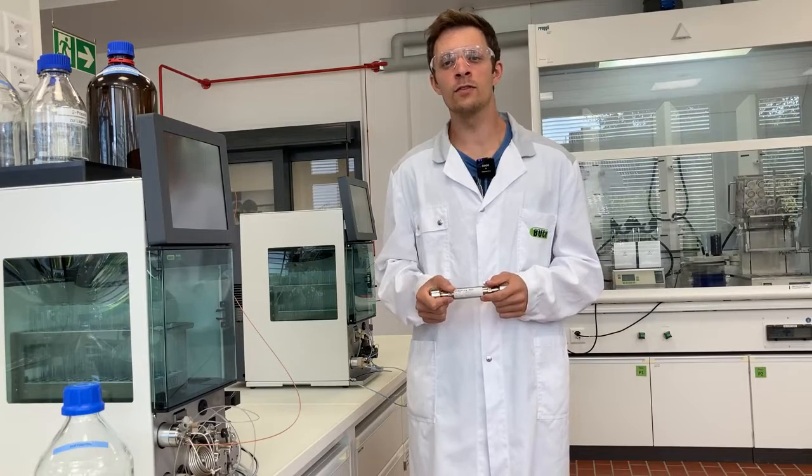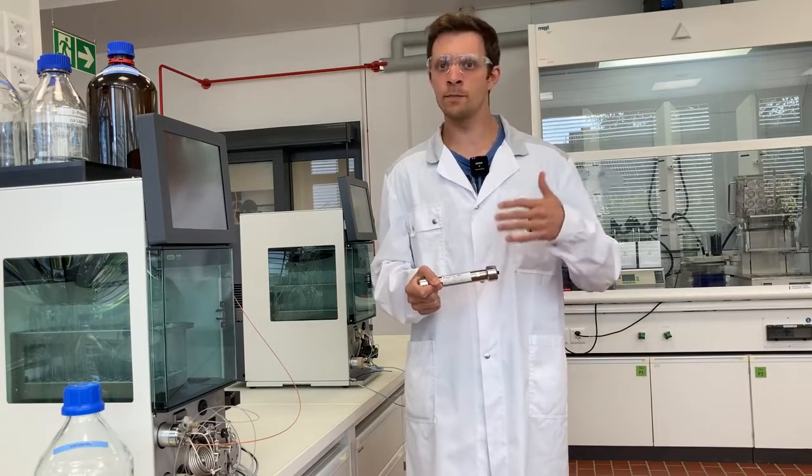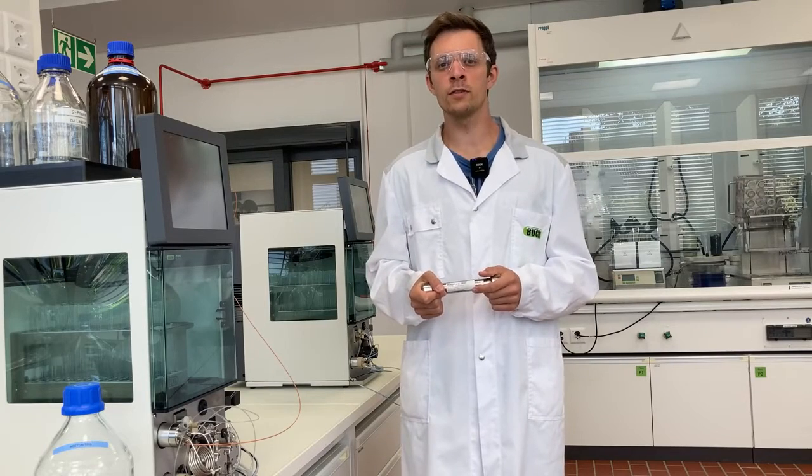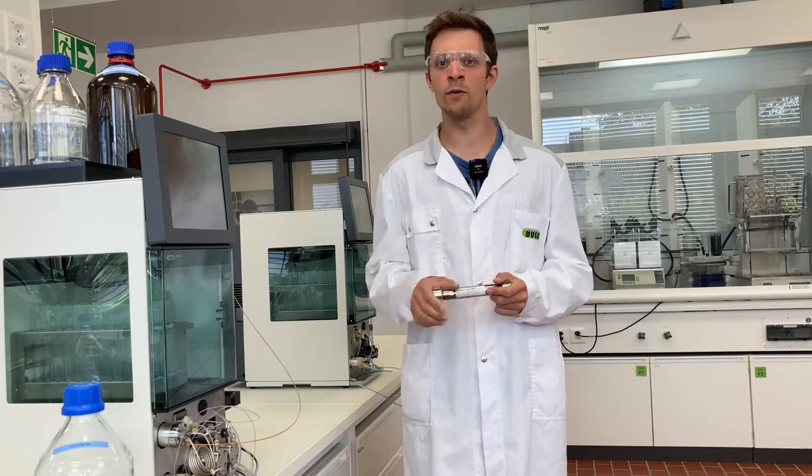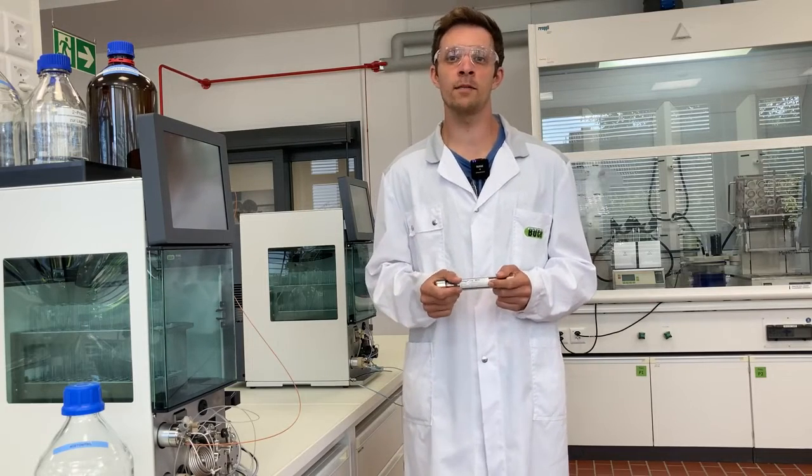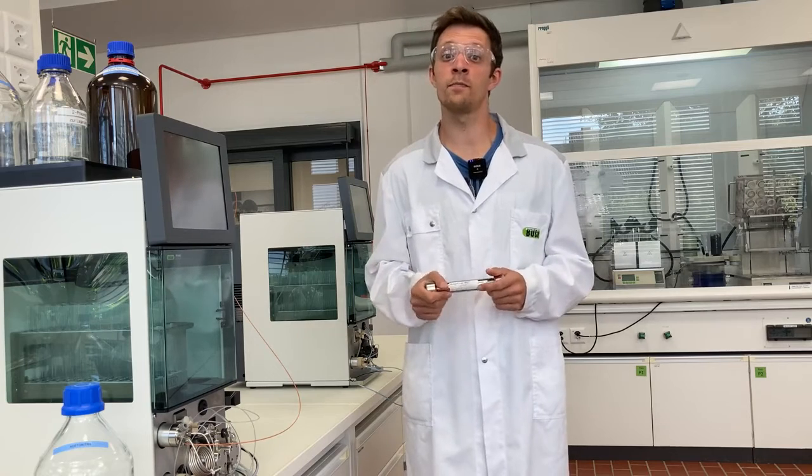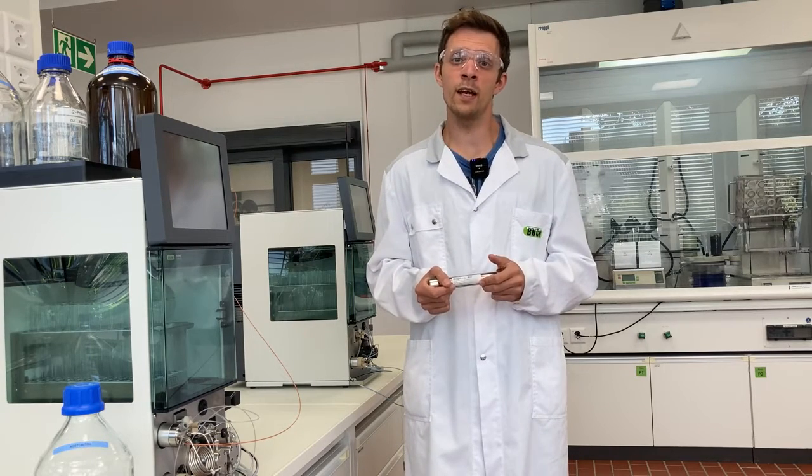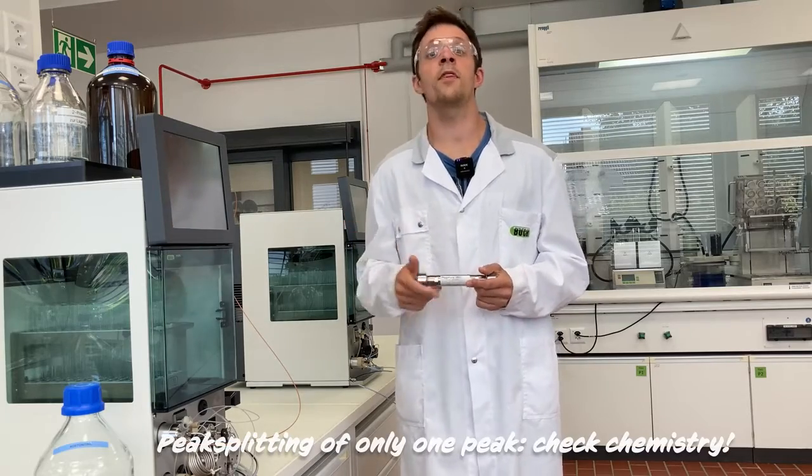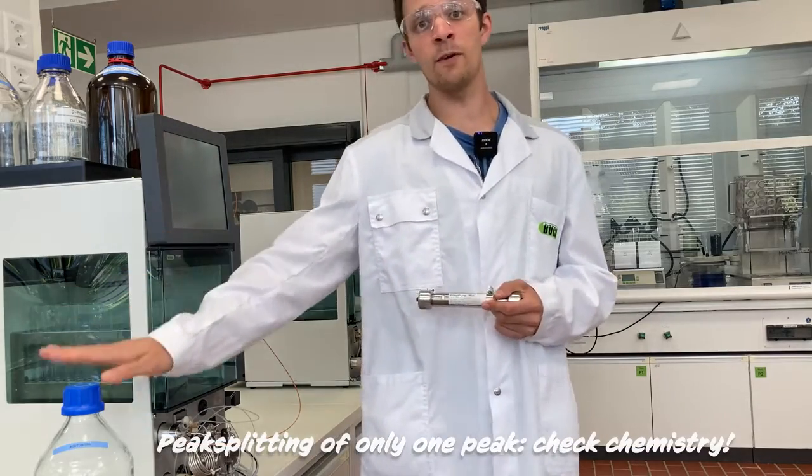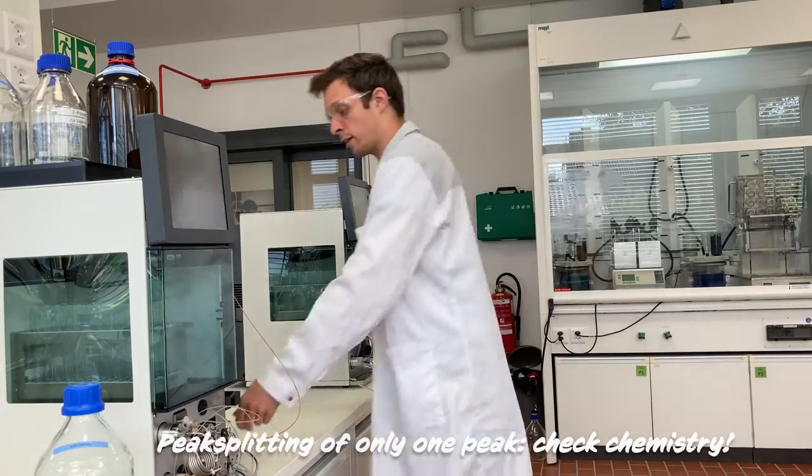Finally, I will go into more detail about peak splitting. If peak splitting occurs, it's important to check if only one peak is affected by peak splitting or if all peaks are affected. If only one peak shows peak splitting, it is most likely a problem with the chemistry. To solve that, you can change the mobile phase or use a different stationary phase.